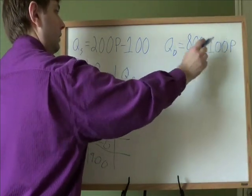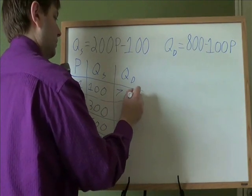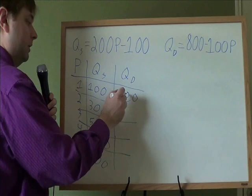So 100 times 1 is 1, 800 minus 100 is 700. If apples are only $1, people want to buy 700 apples a week.